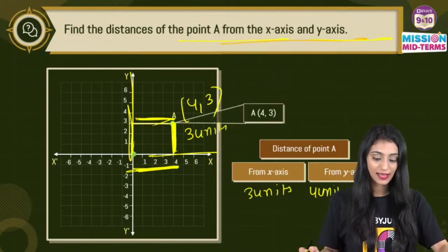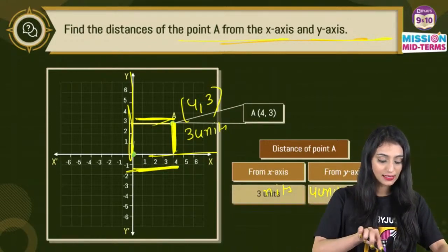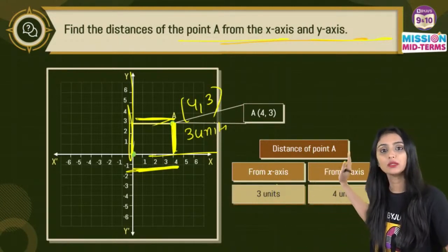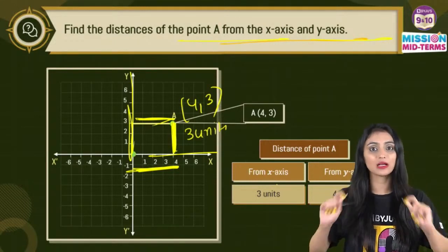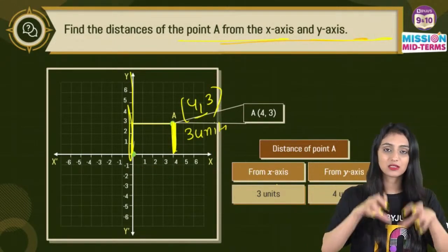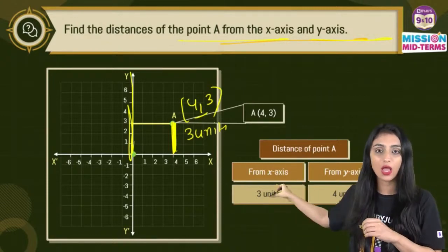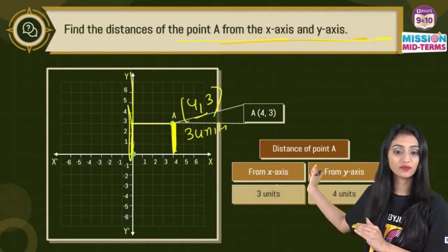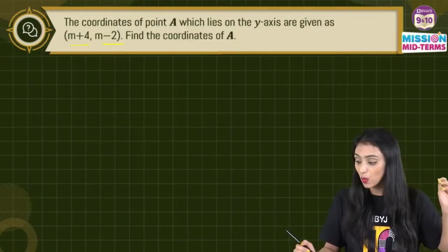Correct, correct. Yes, 4 comma 3 is the point. X-axis se three units, y-axis se four units. Trust me, aise questions exam mein bohot baar aate hai aur yaan peh students mistake karte hai because they think jo x-coordinate hai wahi distance ho ga x-axis ke liye, jo y-coordinate hai wahi distance ho ga y-axis se. But agar aap draw karo and then you observe this, this is going to be different.